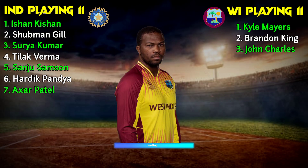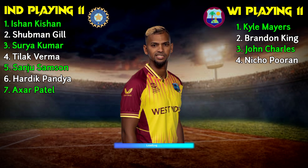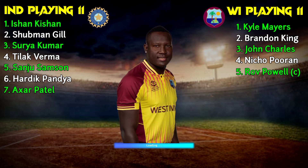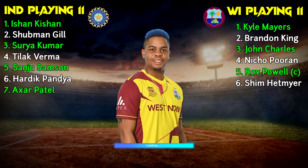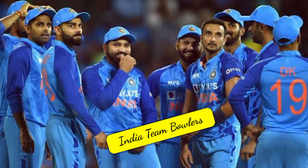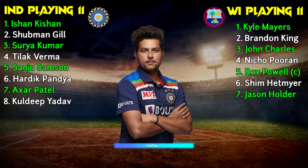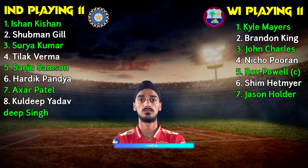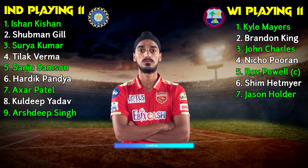West Indies Team Middle Order: No.3 Johnson Charles, Right-Hand Batsman. No.4 Nicholas Pooran, Wicket Keeper Batsman. No.5 Rovman Powell, Captain and Batsman. No.6 Shimron Hetmyer, Left-Hand Batsman. No.7 Jason Holder, All-Rounder.